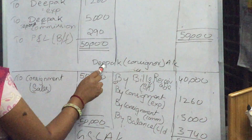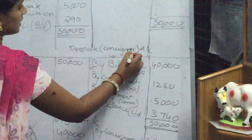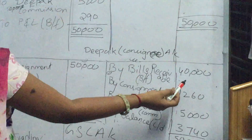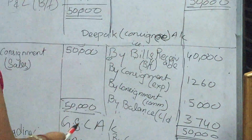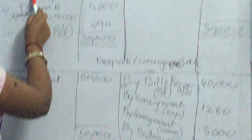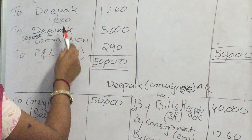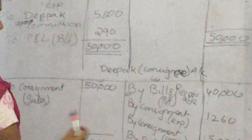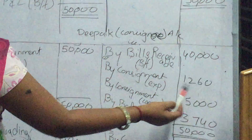We're coming to Deepak account. Who is Deepak? Consignee. First one is bills receivable — we already discussed in the problem, the bills receivable is 40,000. Next, Deepak expenses is there on the credit side — the debit side you should transfer to credit side from the consignment account. By consignment — 1,260, same amount.